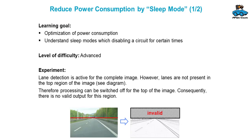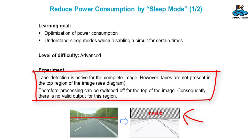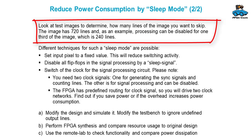What is the background of that? We want to do lane detection with our circuit, and if you look at the input image you will see that the lanes are only present in the bottom of the image. So for the top of the image you don't need to do processing — of course you won't get output for that region either. Have a look at the test image to see how many lines you can skip. I suggest taking the top third: we have 720 lines, so you can make a sleep mode for 240 lines, but you can also use a different number.